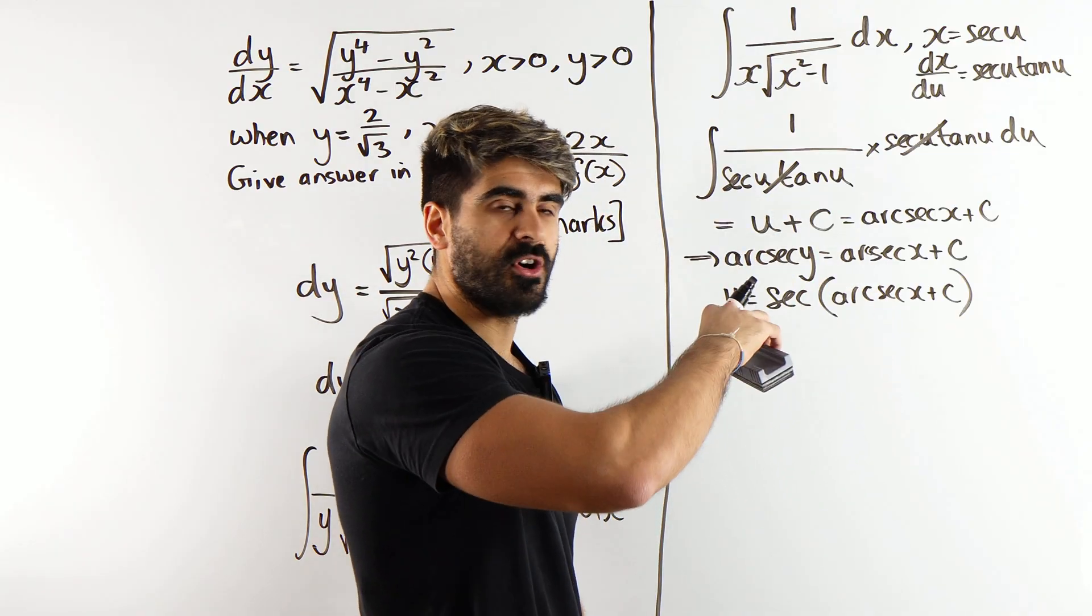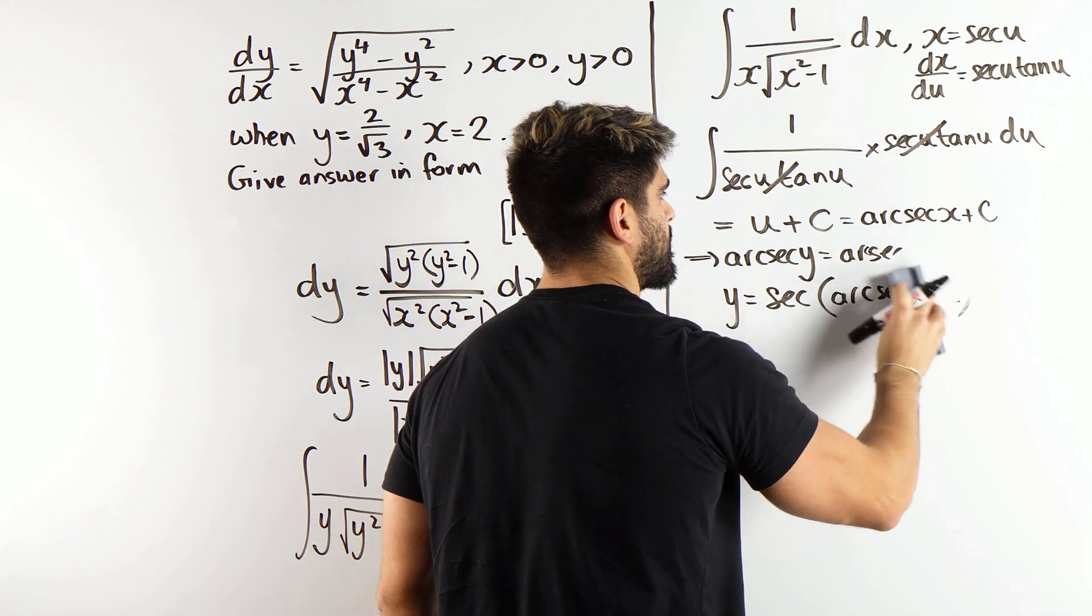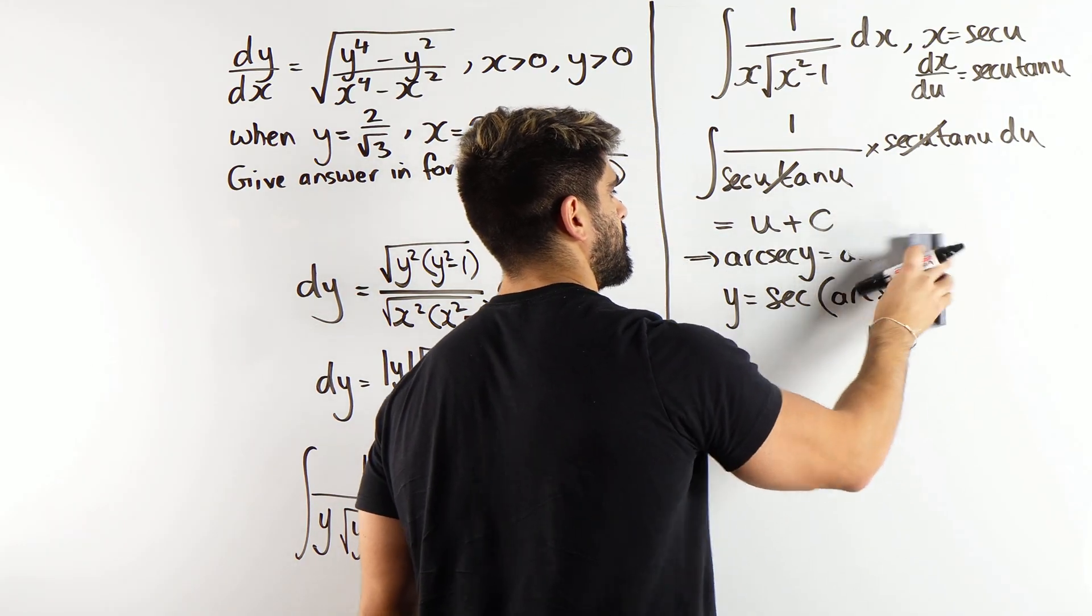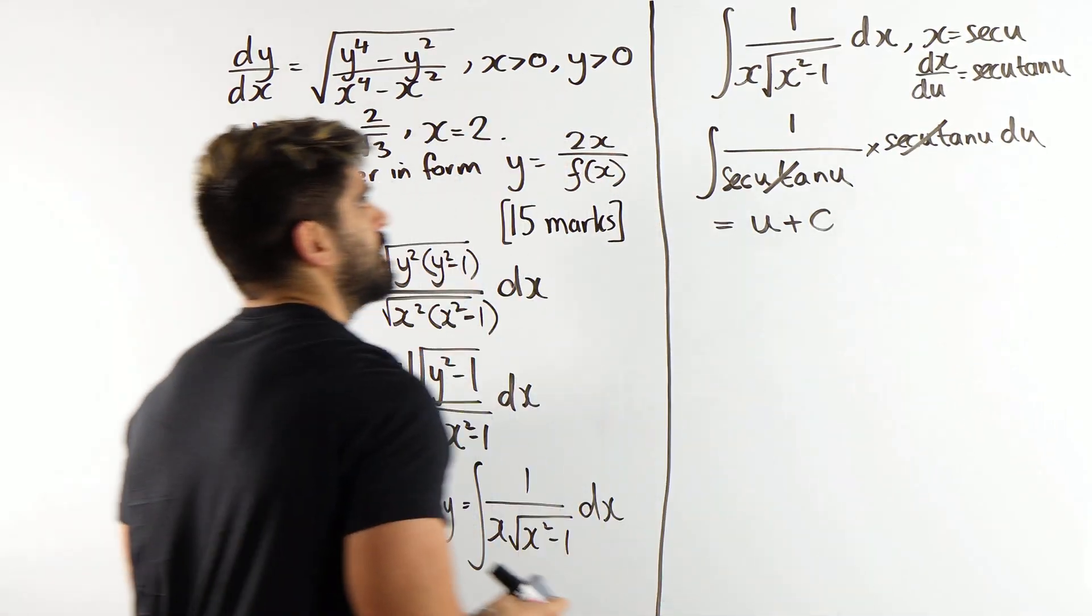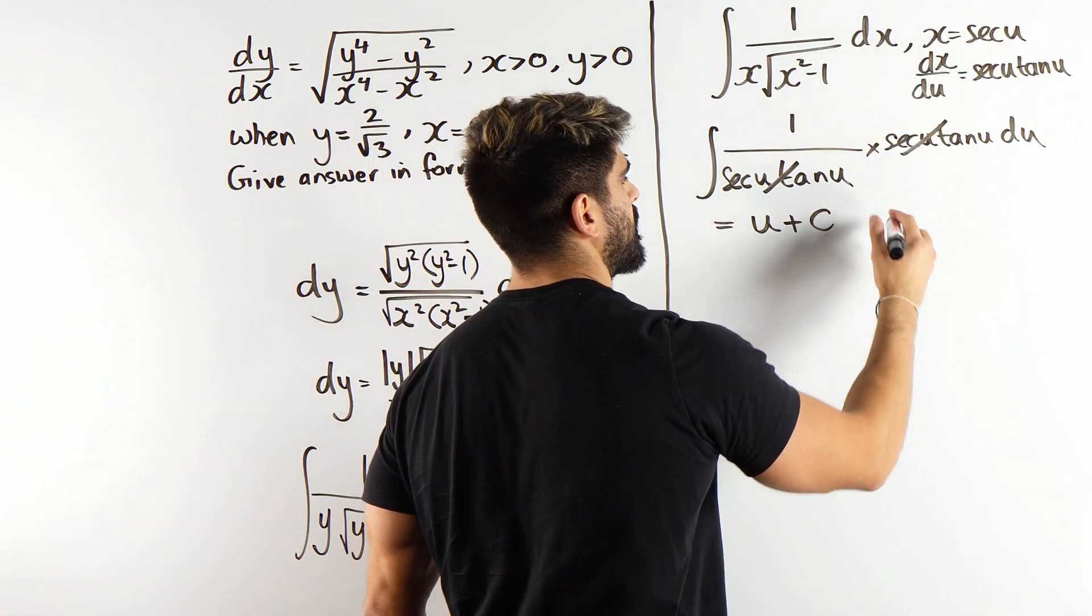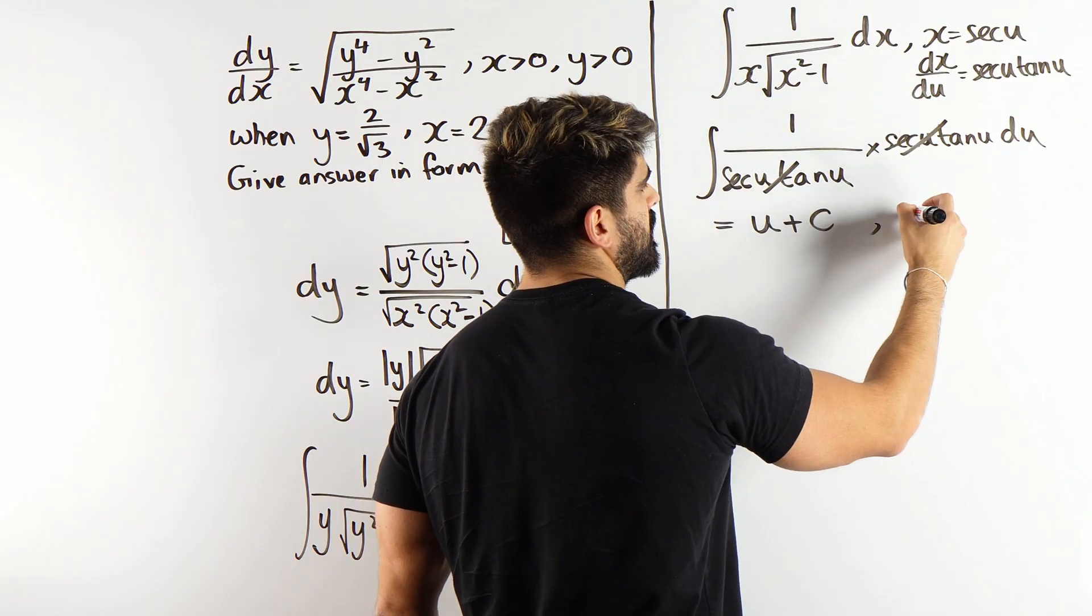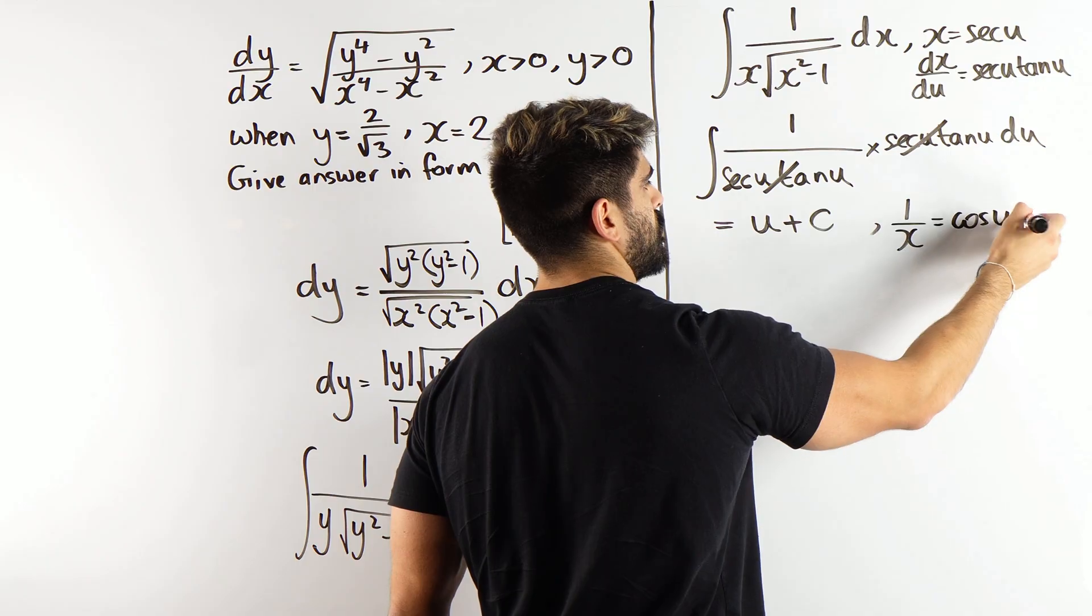I understand it now. So, let's backtrack. In the exam, you would just put a cross and start back, but I want to save board space. I'm going to go back to this point. We had that, actually, let me carry on holding this. We had that x equals sec u. From here, we can go back to cos.